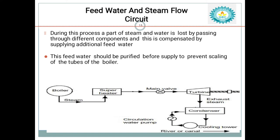Moisture contained in steam causes erosion and corrosion in the turbine. So to eliminate that problem, we use the superheater. After superheating, the steam drives the turbine, causing it to rotate. After expansion in the turbine, the steam enters the condenser.